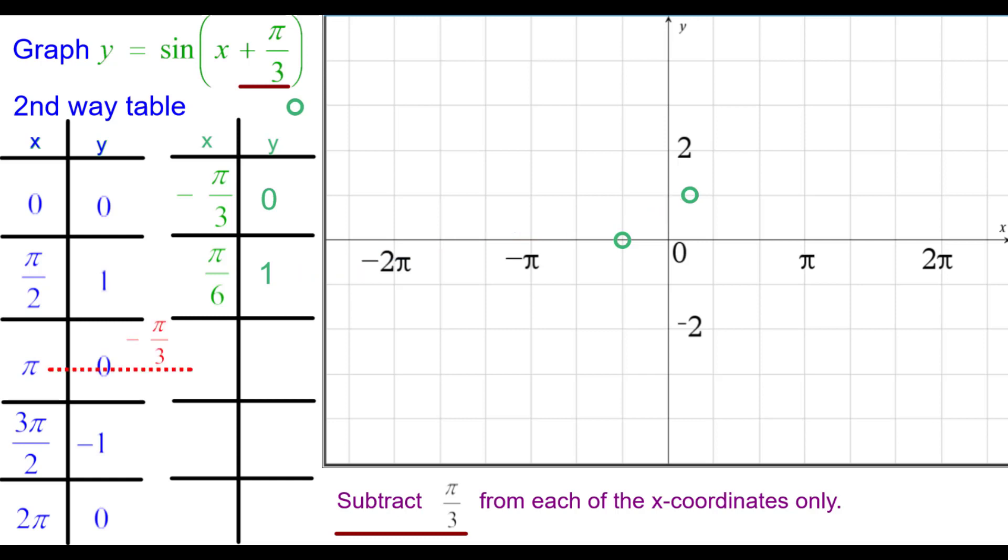Pi minus pi over 3. Again, if you need to see the arithmetic, it's shown here. That's 2 pi over 3. And the y coordinate stays the same at 0. So 2 thirds pi is 0.